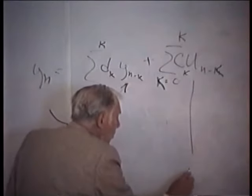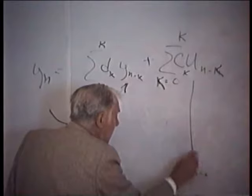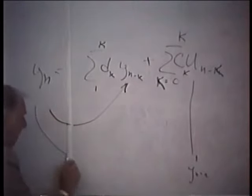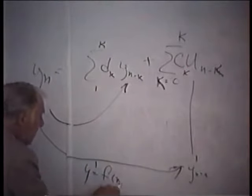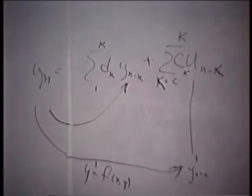As I said last time, I had done something like this where these were y_n minus k primes — derivative values of a differential equation. Therefore I had a second feedback path through the differential equation y prime equals f of x and y. So there are two feedback paths, and I had more trouble. Stability is the major problem.